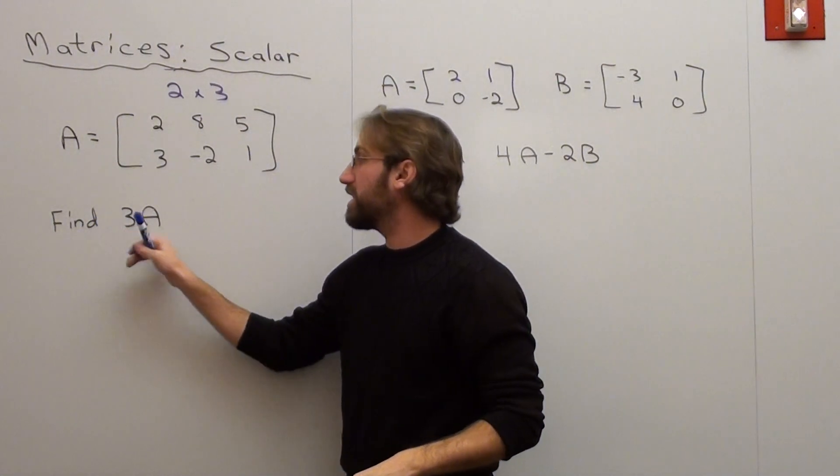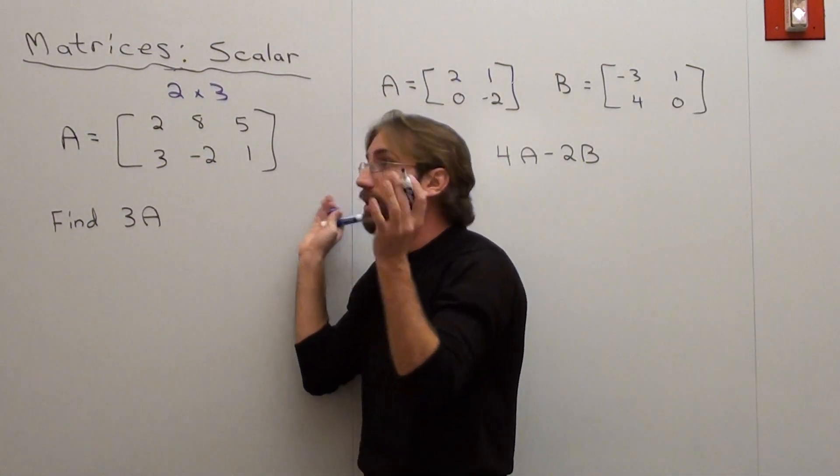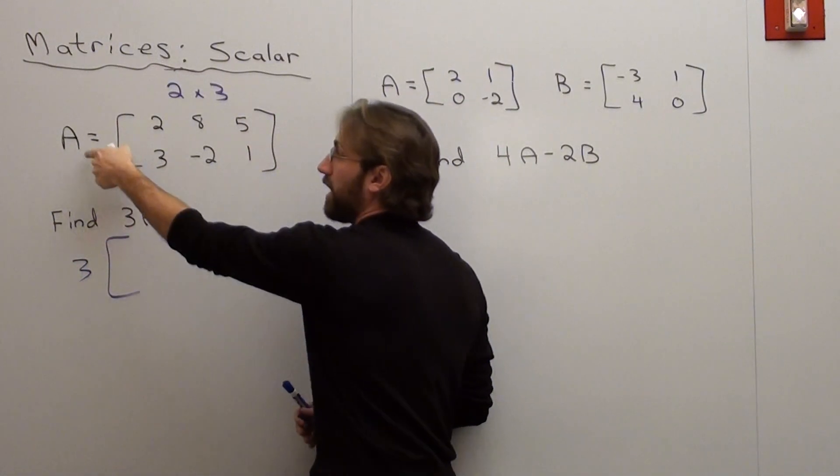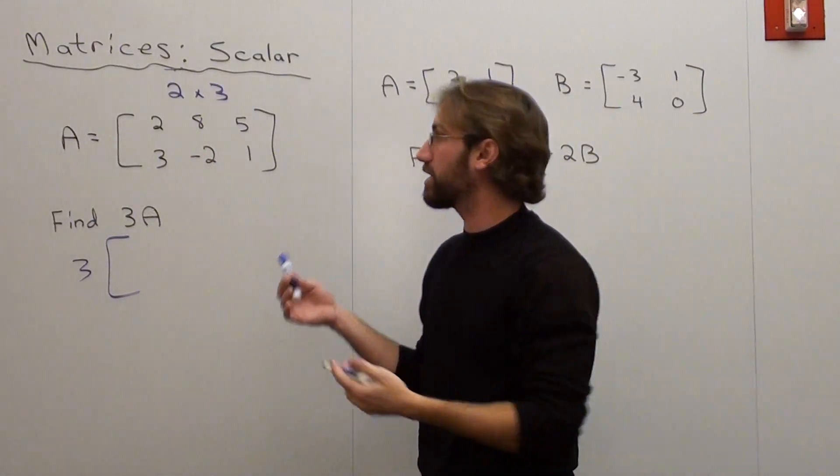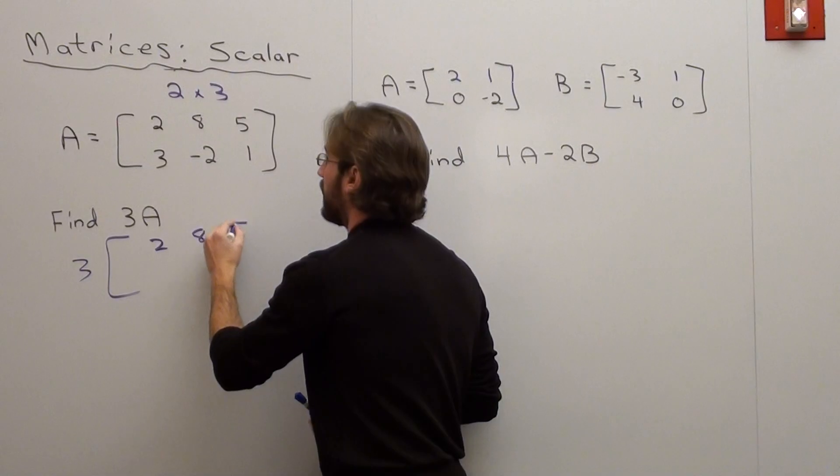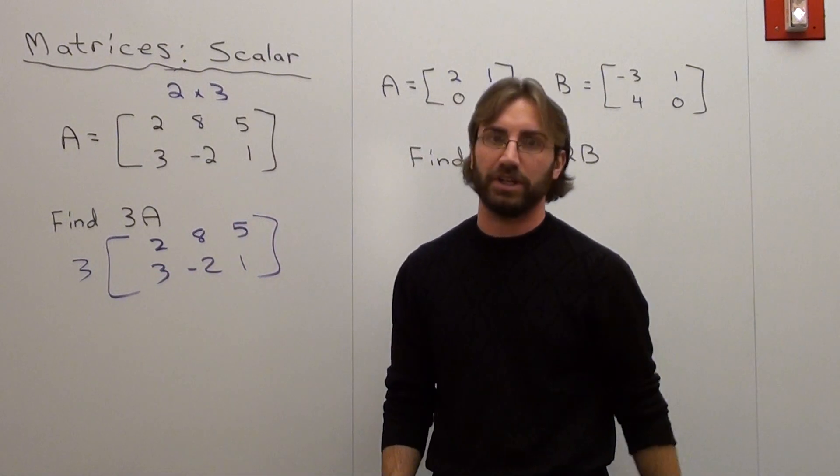We want to find 3 times this matrix. So I want to find this matrix right here. We'll see how to do it. So basically all you do is you take 3, and then you multiply it by A, and A happens to be the matrix, the 2 by 3 matrix, I should say: 2, 8, 5, 3, negative 2, 1. Okay, here's how you do it.